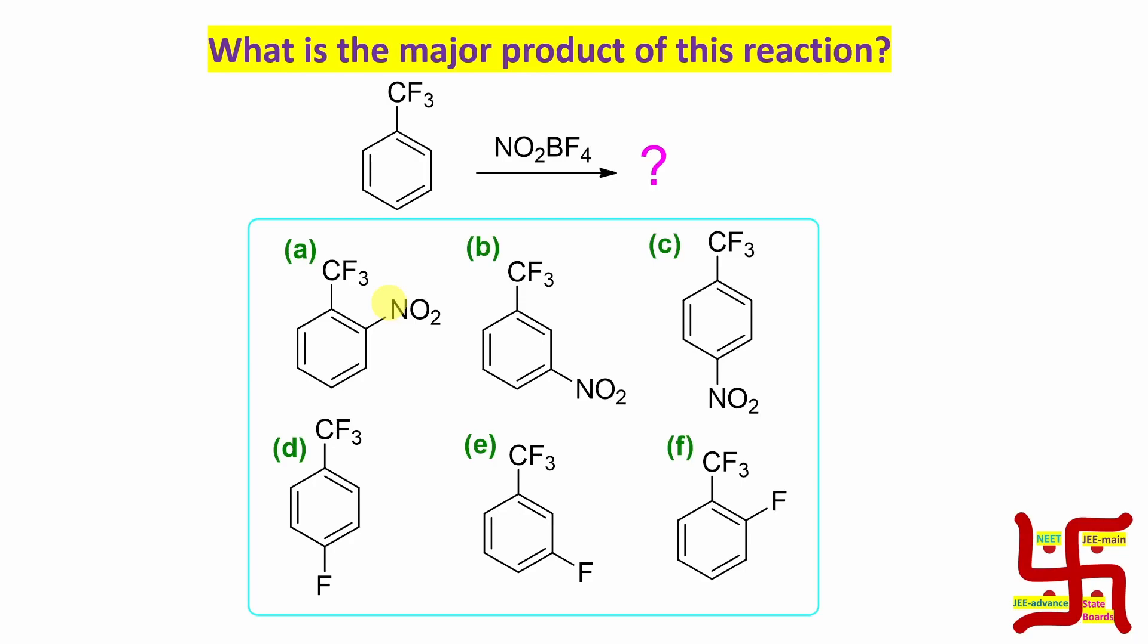Now if you look at this, this is actually a trifluoromethyl attached benzene ring. What type of group is this CF3? This CF3 is an electron withdrawing group, more specifically a sigma withdrawing group, meaning it shows very strong minus i effect.